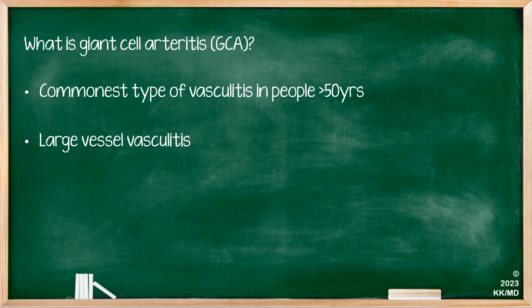To start with, we're going to cover the definition of giant cell arteritis, or GCA for short. It's the commonest type of vasculitis in people older than 50. And as you may recall from our previous lecture on an overview of vasculitis, it is a type of large vessel vasculitis.